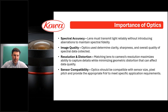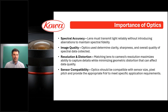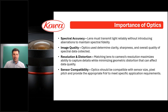Optics are very important in hyperspectral and multispectral imaging, or any sort of wideband imaging, to make sure you're getting the most performance out of your system. For spectral accuracy, the lens must transmit light reliably without introducing aberrations and must maintain spectral fidelity. For image quality, optics determine clarity, sharpness, and the overall quality of spectral data collected. For resolution and distortion, matching your lens to the camera's resolution will maximize detail capture while minimizing geometric distortion. And for sensor compatibility, your optics must be compatible with the sensor size, pitch, and provide the appropriate field of view.